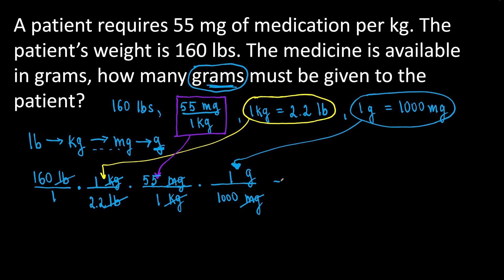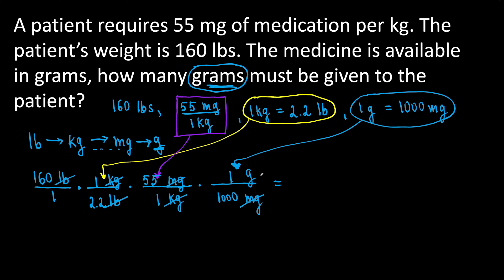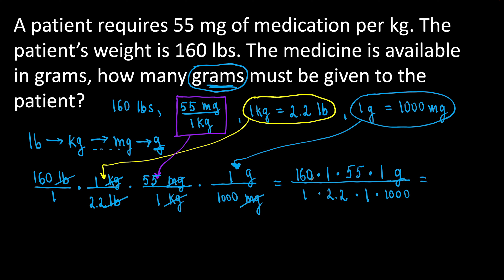It's exactly what we need to find in this problem. Now let's do the math. We are multiplying fractions: multiply the numbers in the numerator, then multiply the numbers in the denominator. In the numerator: 160 × 1 × 55 × 1 = 8,800 grams on top. In the denominator: 1 × 2.2 × 1 × 1,000 = 2,200. Now, 8,800 divided by 2,200 gives us 4 grams. We found how many grams we need to give to the patient — it is 4 grams.